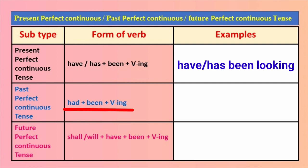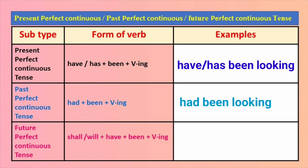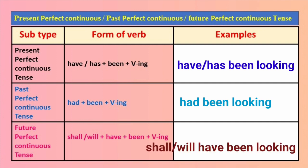Past Perfect Continuous Tense मधे Had + Been + Verb+ING. For example: Had + Been + Looking. Future Perfect Continuous Tense मधे Shall / Will + Have + Been + V-ING. For example: Shall / Will + Have + Been + Looking.